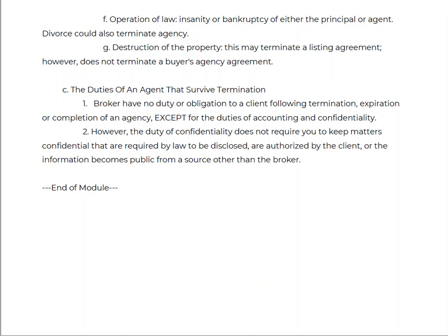Confidentiality survives termination unless the confidential information becomes public, or unless the client gives you permission to share it. For example, if a client says 'don't tell anyone I'm losing my job — that's why I'm selling,' that is confidential. But if it becomes public — like a newspaper article announcing a factory closing and mass layoffs — then that information is publicly known, and you no longer owe that duty of confidence.